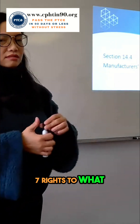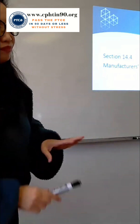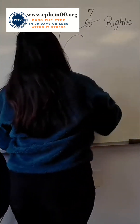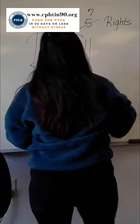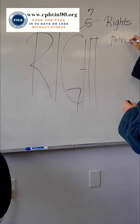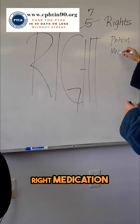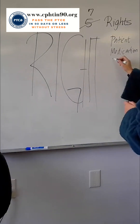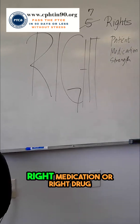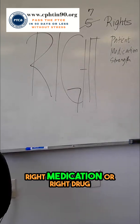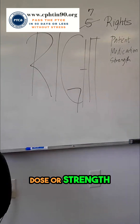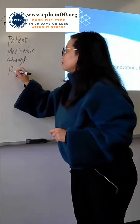Seven rights — what is that? What are the seven rights? Right patient. Right medication. Right strength or dosage. Right drug. Right dose or strength. Right route.